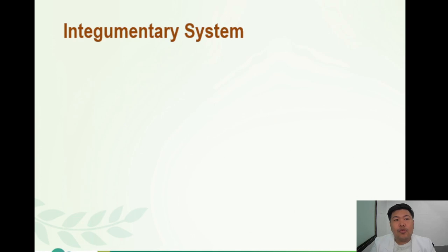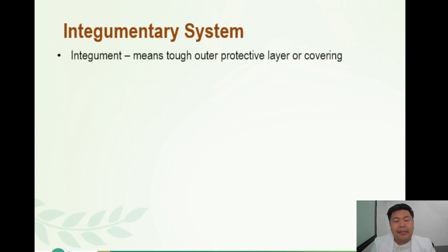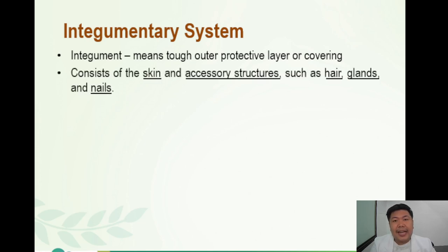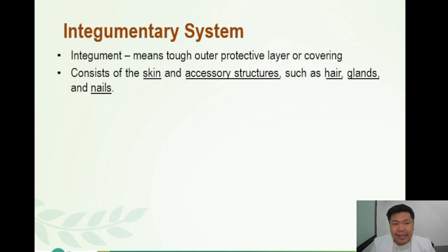We are going to tackle the integumentary system. When we say integument, it means a tough outer protective layer or covering layer, which perfectly describes the skin. The integumentary system consists mainly of the skin and other accessory structures such as the hair, the glands, and the nails, which are also found in the skin. The skin acts as a protective layer, protecting our muscles, our bones, and our internal organs from all external stimuli.